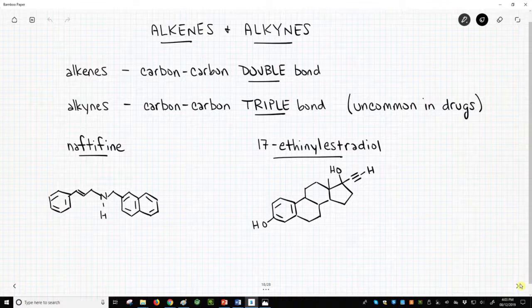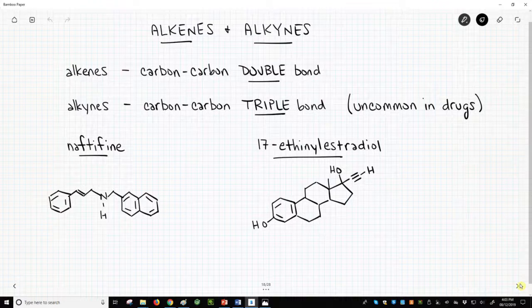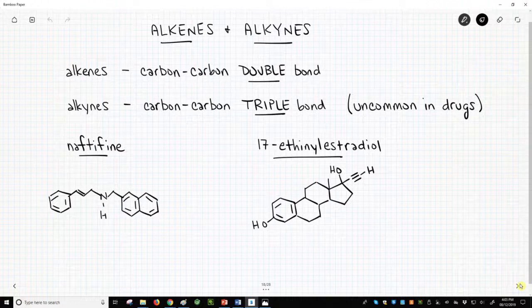So again, alkenes are carbon-carbon double bonds. We will see alkenes very frequently in drugs and drug-like molecules. Alkynes are carbon-carbon triple bonds. Alkynes are rarely found in drugs.